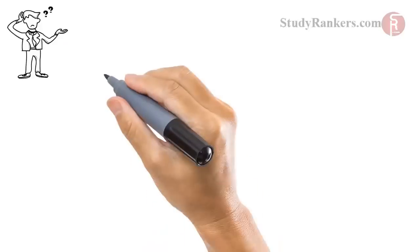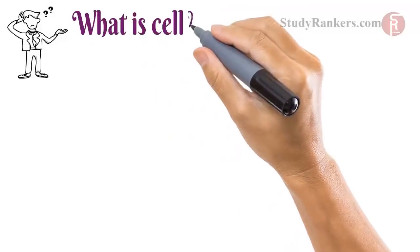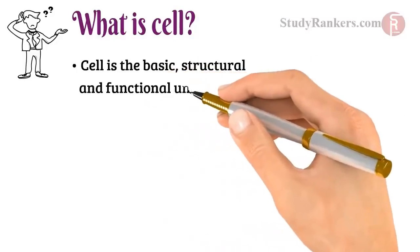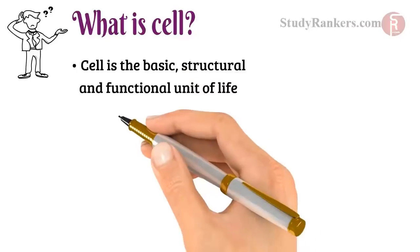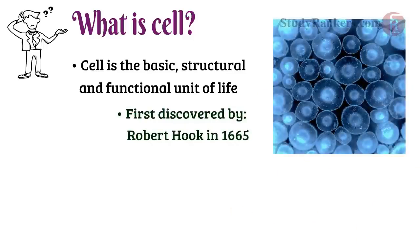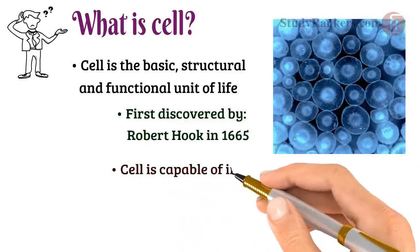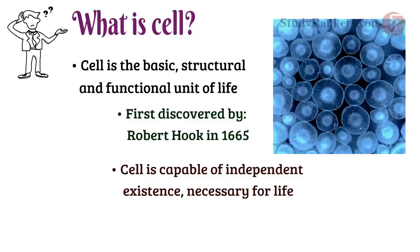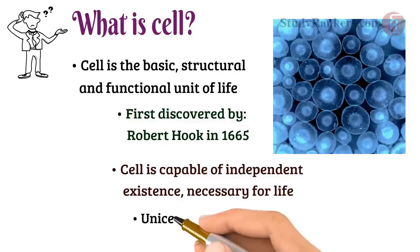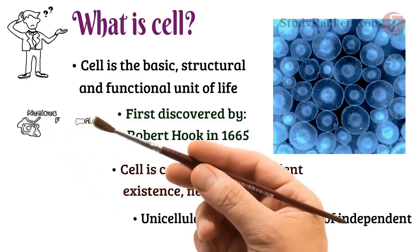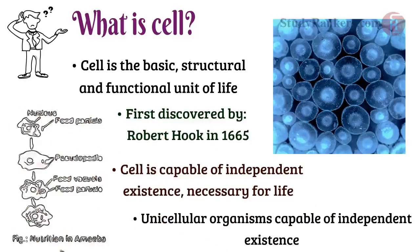The very first thing that comes to our mind before starting the chapter: what is cell? Cell is the basic structural and functional unit of life, discovered by Robert Hooke in 1665. A cell is capable of independent existence and can carry out all the functions which are necessary for a living being. Unicellular organisms are capable of independent existence, which shows a cell's capability to exist independently, like in amoeba.